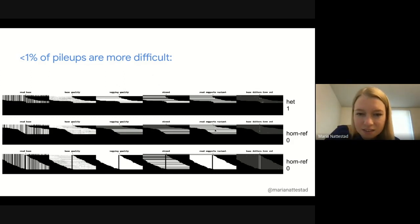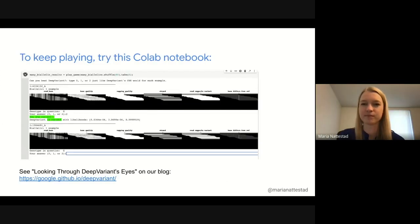These are all coming from Genome in a Bottle's truth sets. That's how we do training, how we evaluate, basically where we get our truth set from. You have one here where you have very little read support, but it's actually supposed to be heterozygous according to the truth set. This is a zero, but maybe it looks more like one. And this is supposed to be a zero as well, because that deletion comes right before the variant. If you want to try playing against DeepVariant some more, check out this Colab notebook linked in our blog post Looking Through DeepVariant's Eyes.